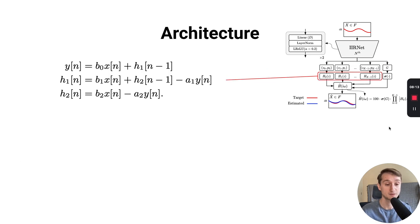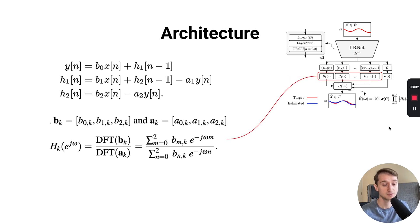But then the next step, we have to measure the response of those second-order sections in order to compute the loss. One way to do this would simply be to compute the impulse response of each of the filters in the time domain. But as you can see from this function, we would have to do some recursion in time, and we really would like to avoid that.